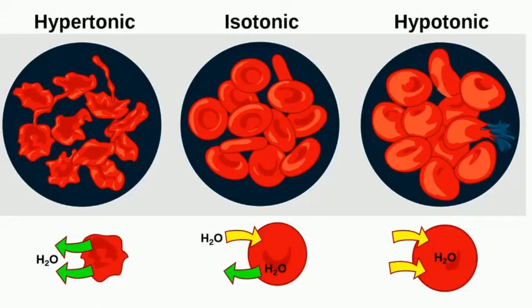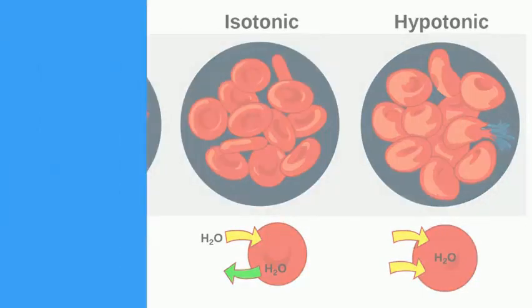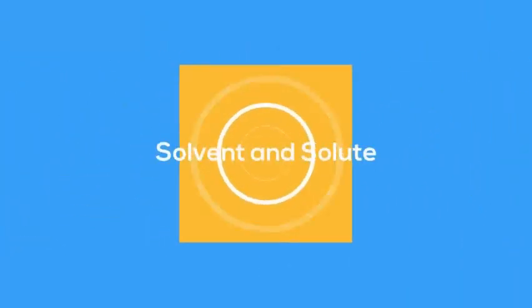Let's figure out why sometimes a red blood cell stays the same, sometimes it shrinks, and other times it swells. To begin with, it will be helpful to know the difference between a solvent and a solute.